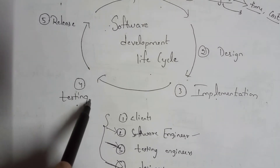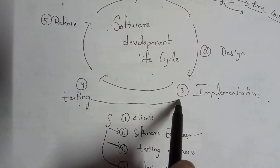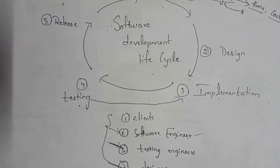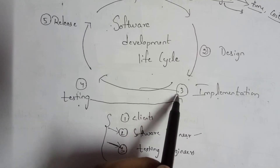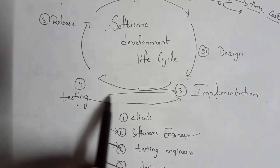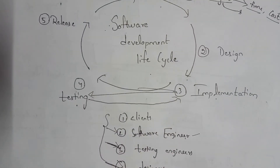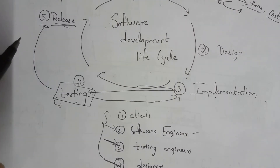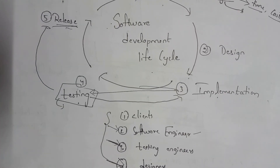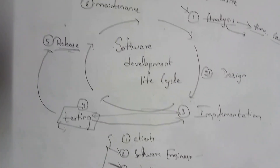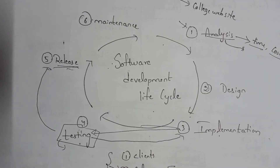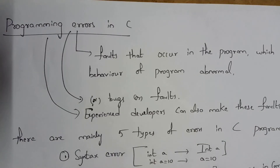After creating the software code, the engineers submit it to the testing engineers to identify errors. If errors are found, the testing engineers send the code back to the software engineers to correct it, and the cycle repeats. If there are no errors, in the release phase the project is submitted to the client. The last step is maintenance, which is updating the software from time to time. These are the six stages in the software development life cycle.